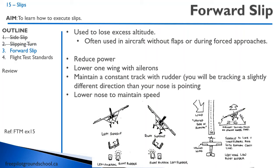The third slip is the forward slip. Often people call a side slip a forward slip, but technically a forward slip is used for losing altitude, whereas a side slip is used for maintaining a runway centerline. To do a forward slip, reduce the power, lower one wing with the ailerons, and maintain a constant track with the rudder along a reference point like the extended runway centerline. Lower the nose to maintain speed. The difference between a side slip and a forward slip is that in a side slip, the longitudinal axis is aligned with the direction of flight and corrects for crosswind. In a forward slip, the longitudinal axis is offset from the banked attitude — you're flying the aircraft sideways — which increases drag and increases your rate of descent.